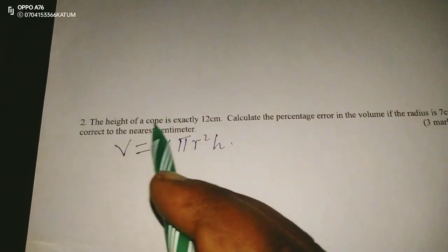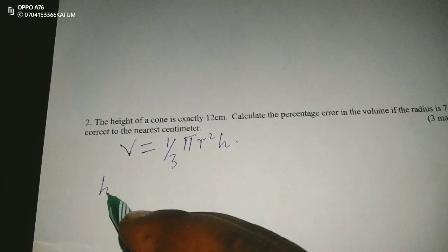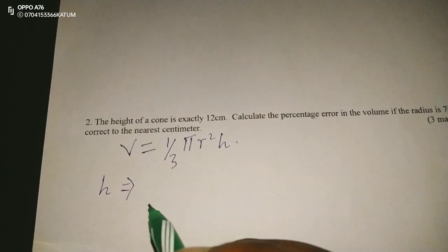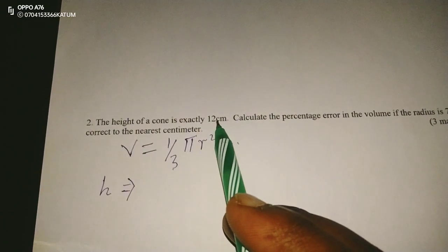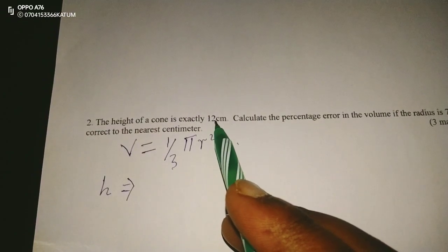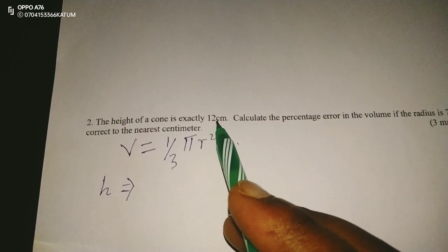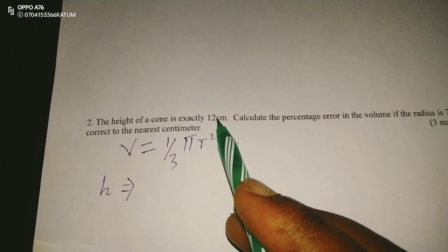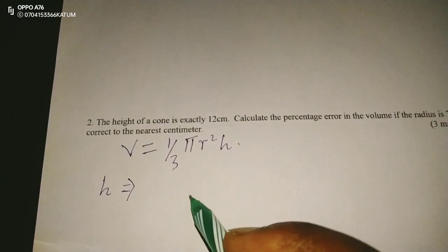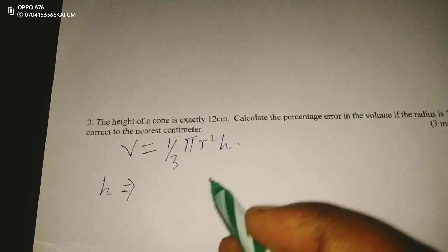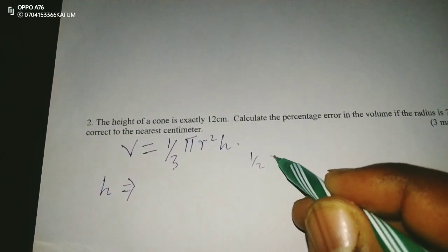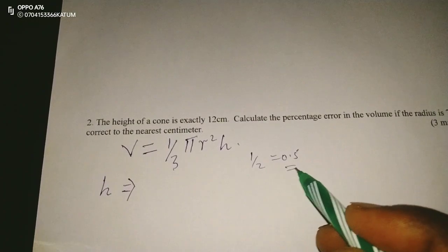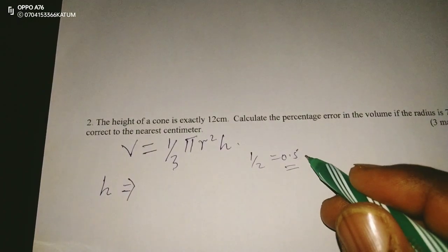We can take the height and determine its range. The range of the height — because it has been recorded to the nearest centimeter — means the absolute error in the recording of this height is 1 divided by 2, which gives us 0.5. This is the absolute error in centimeters.